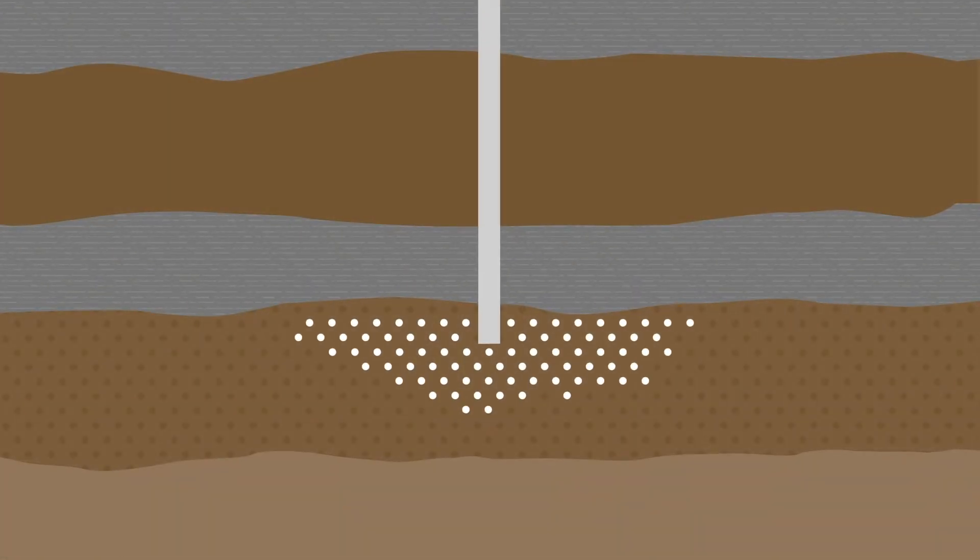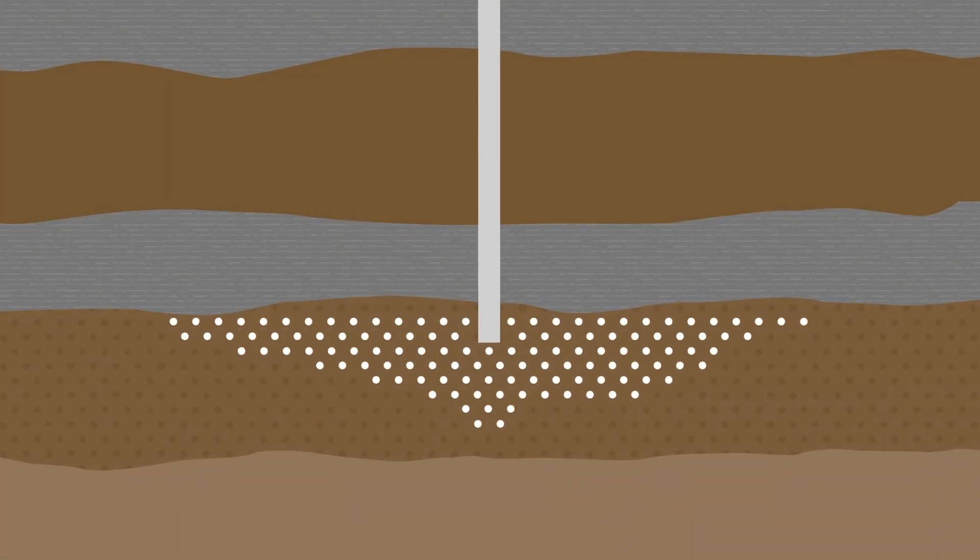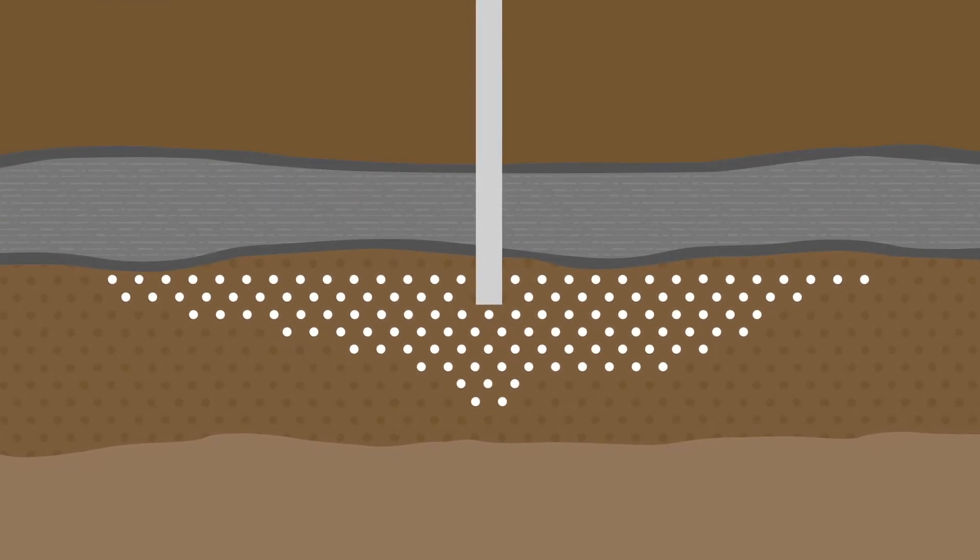Emissions are trapped in the pores of deep geologic formations with impermeable rock layers acting as seals to naturally prevent CO2 from escaping back into the atmosphere.